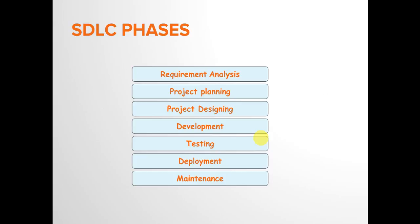The different phases are: first, requirement analysis, where all requirements are gathered and analyzed to eliminate ambiguity and to make sure that every requirement is practical to develop and implement. Next is project planning, where the planning is done for how the development phases will proceed.